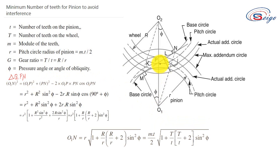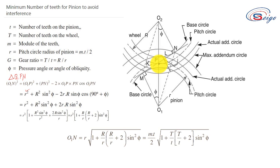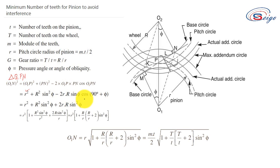The value of O1P is actually the pitch circle radius of the pinion, which is small r. For PN, from the figure there is an angle phi and the pitch circle radius of the gear wheel equals capital R, so the distance PN will be equal to R sin phi. Therefore, PN squared equals R squared sin squared phi. So minus 2 times O1P which is r, PN which is R sin phi, and cos of angle O1PN.